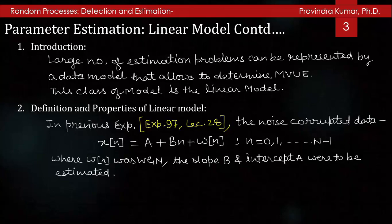We have seen that the variance of â satisfies: variance of â ≥ 2(2N − 1)σ² / [N(N + 1)].